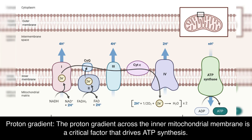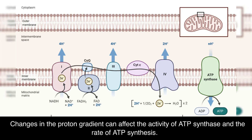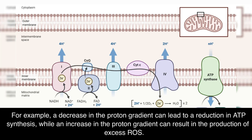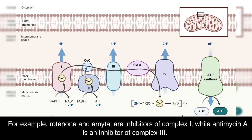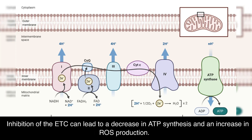Proton gradient: the proton gradient across the inner mitochondrial membrane is a critical factor that drives ATP synthesis. Changes in the proton gradient can affect the activity of ATP synthase and the rate of ATP synthesis. For example, a decrease in the proton gradient can lead to a reduction in ATP synthesis, while an increase in the proton gradient can result in the production of excess ROS. Inhibitory molecules: the ETC can be inhibited by various molecules that bind to the protein complexes and disrupt electron transfer. For example, rotenone and amytal are inhibitors of Complex I, while antimycin A is an inhibitor of Complex III. Inhibition of the ETC can lead to a decrease in ATP synthesis and an increase in ROS production.